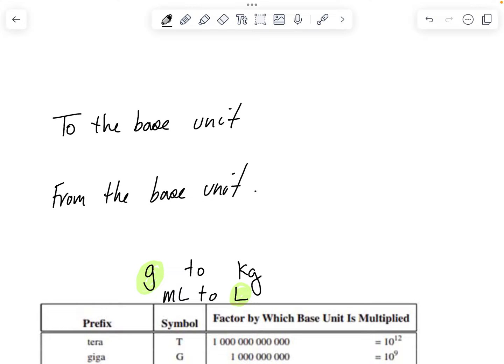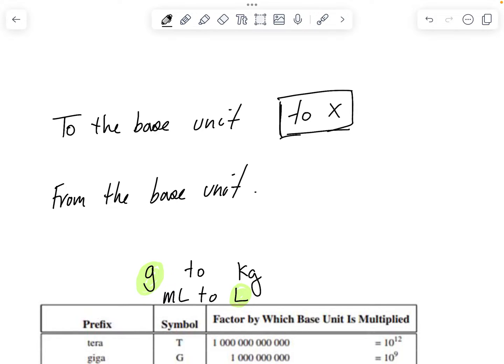So when we go to the base unit, we multiply. So I like to just kind of remember TOX. If we're going to the base unit, it's multiplying. And if we are going from the base unit, it's a divide. So from is a divide. However you want to remember it. But if we're going to the base unit, it's a multiplication.